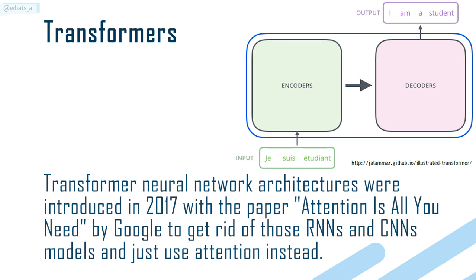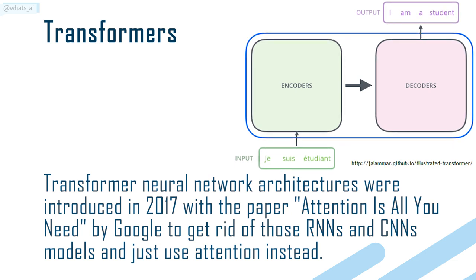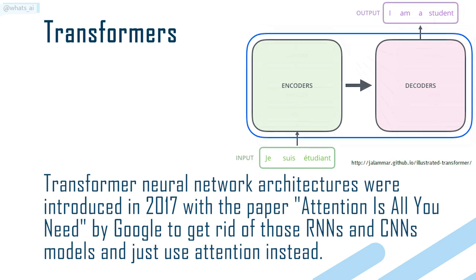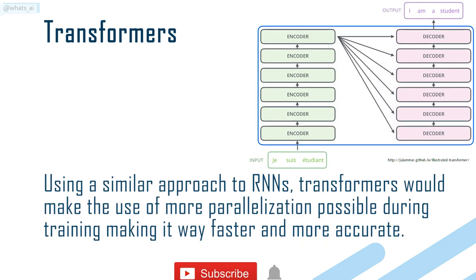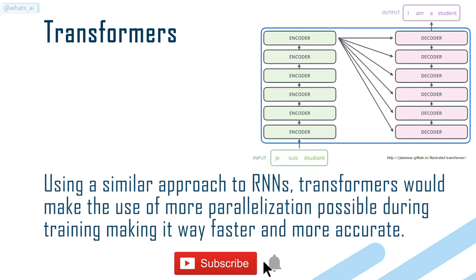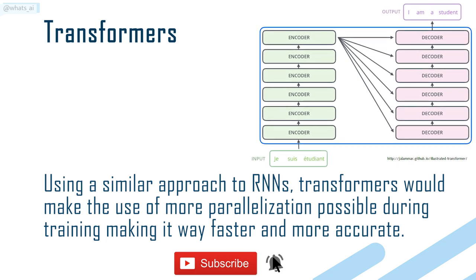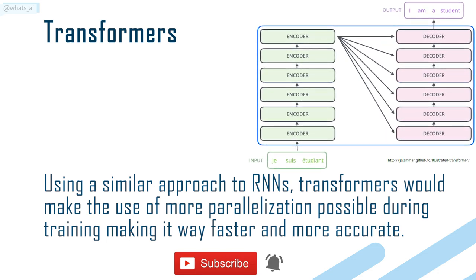Transformer neural network architectures were introduced in 2017 with the paper 'Attention is All You Need' to get rid of those RNNs and CNNs models and just use attention instead. Using a similar approach to RNNs, transformers make the use of more parallelization possible during training, making it way faster and more accurate.